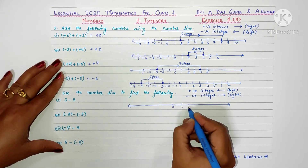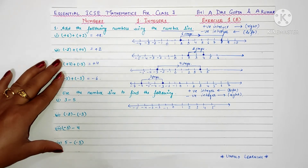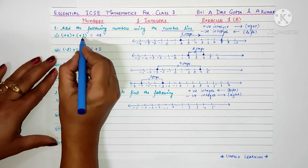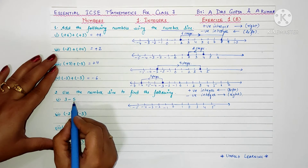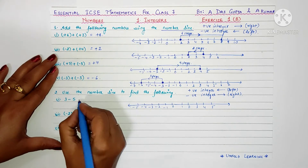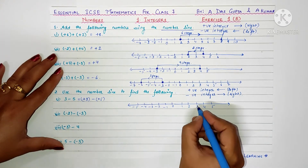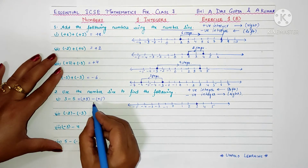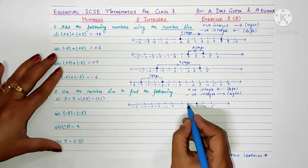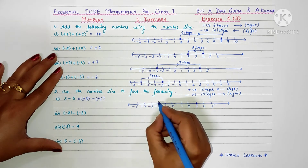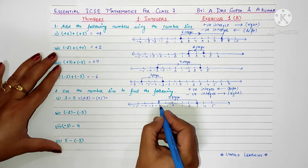I'll draw a number line: zero, one, two, three, four, five, minus one, minus two, minus three, minus four, minus five. We have plus three minus plus five. We mark plus three first. Now we need to subtract a positive integer, so we move left — five steps: one, two, three, four, five. We moved five steps and get the answer as minus two.